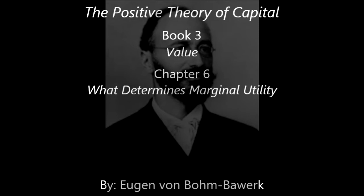It runs thus: the more comprehensive and the more intense the want, the higher the marginal utility, and vice versa. That is to say, the more numerous and the more intense the wants demanding satisfaction on the one hand, and the less the quantity of goods available to satisfy them on the other hand, the more important are the layers of want that must remain unsatisfied, and the higher, therefore, the marginal utility.